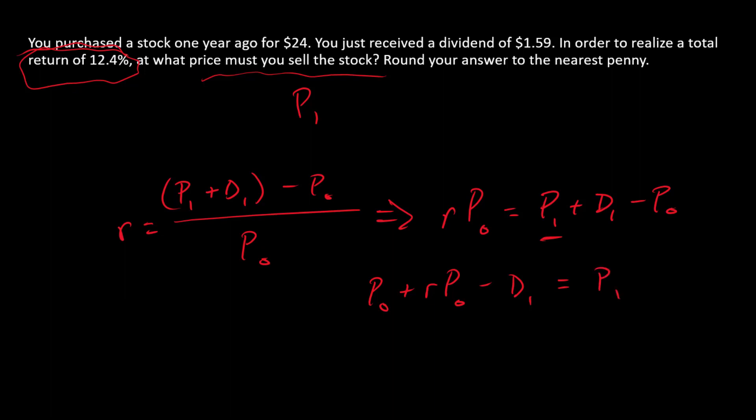I just moved the D1 and the P0 over to the left side. I could simplify by saying P0 times 1 plus R minus D1. That's going to get me to P1 as well. So you can choose exactly how you want to format this.